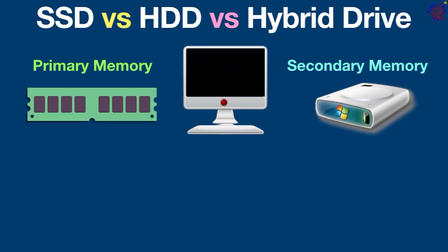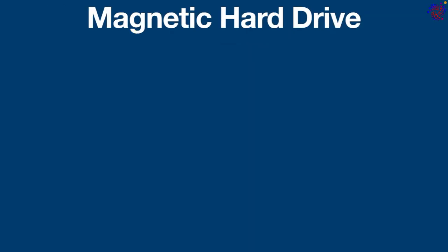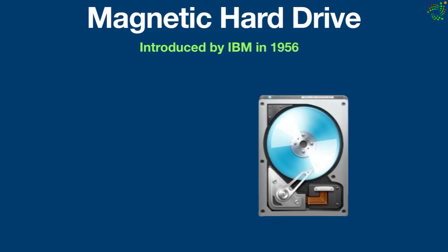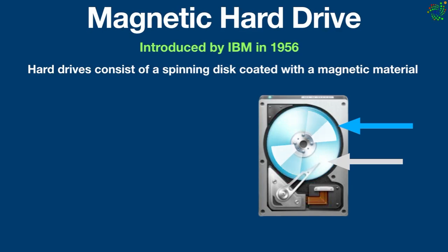There are different types of internal storage drives: magnetic hard drives, solid-state drives, and hybrid drives. Magnetic hard drives have been around for decades and are the more traditional type of storage device. They were introduced by IBM in 1956. Hard drives consist of a spinning disk coated with a magnetic material and a read-write head that reads and writes data on the disk surface.